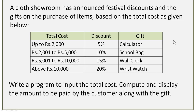First you are going to see a question: a cloth showroom has announced festival discounts and gifts on the purchase of items based on the total cost. You are going to get the total cost as input from the user, verify it against the criteria given in a table, calculate the discount rate, and display the gift based on the total cost.